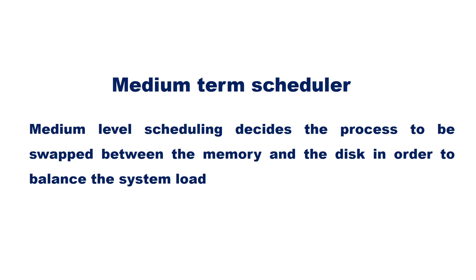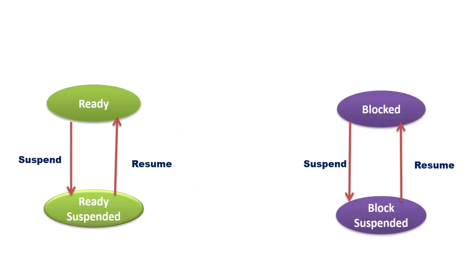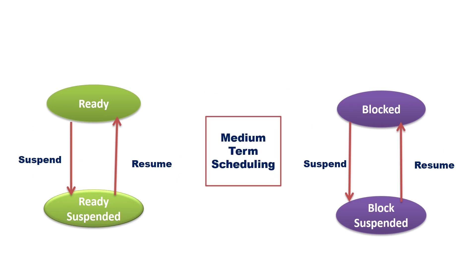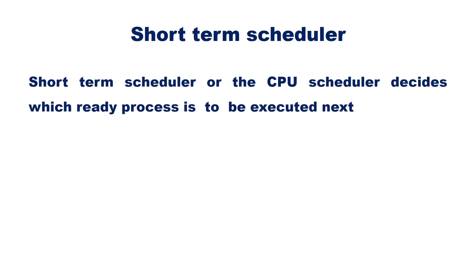The medium-term scheduler decides which ready or blocked process should be moved to the suspended state, or vice versa. The short-term scheduler, or CPU scheduler, decides which ready process is to be executed next.